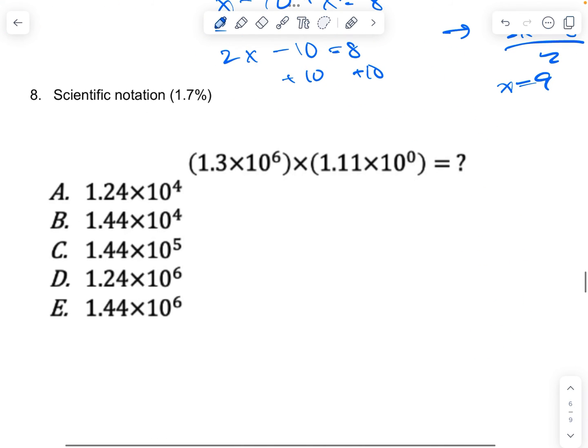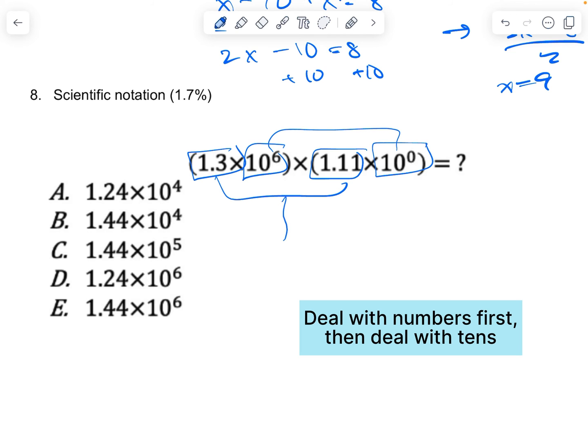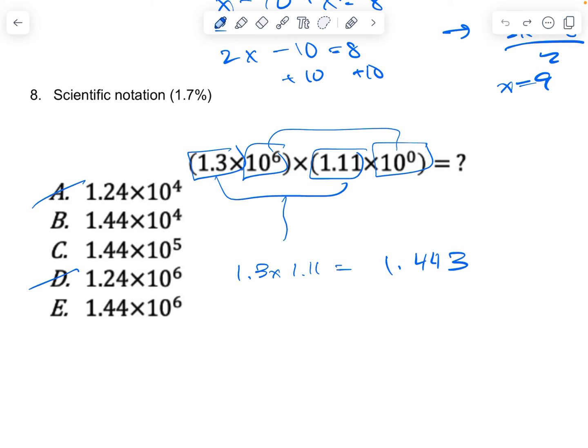Scientific notation. If it's a multiplication or division, you can really divide the problem into two different steps. First, you're going to multiply or divide these two guys here. And then you're going to multiply or divide these two guys here, the exponents. So 1.3 times 1.11, do it on your calculator, is 1.443. So you already know these are out. And then 10 to the 6 times 10 to the 0, you can do that on your calculator. But I know in this case it's just going to be 10 to the 6th because 10 to the 0 is just 1.